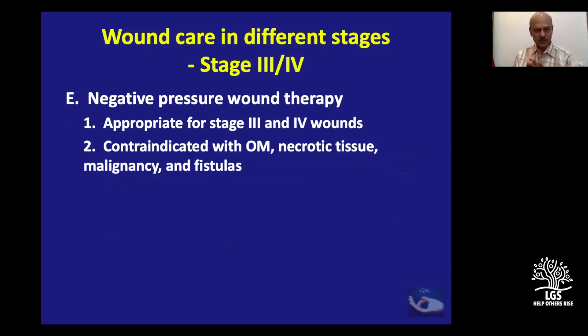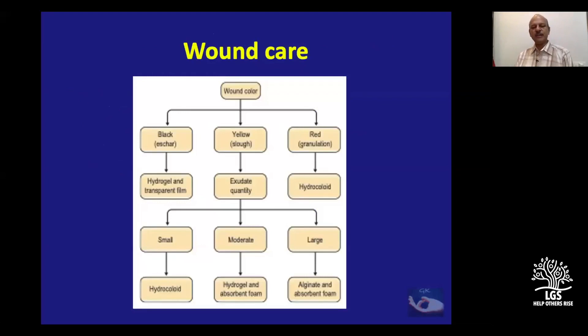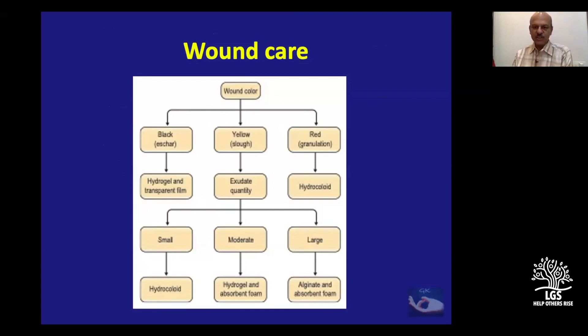Negative pressure wound therapy (NPWT) is ideal for all pressure sores except when there is frank osteomyelitis, necrotic tissue (which must be excised first), suspected malignancy in the area, or fistula formation. Regarding wound color: if there is black eschar, use hydrogel; if yellow, address exudate — if exudate is large, use an absorbent like alginate; if small, use hydrocolloid. If there is red granulation tissue, use hydrocolloid.